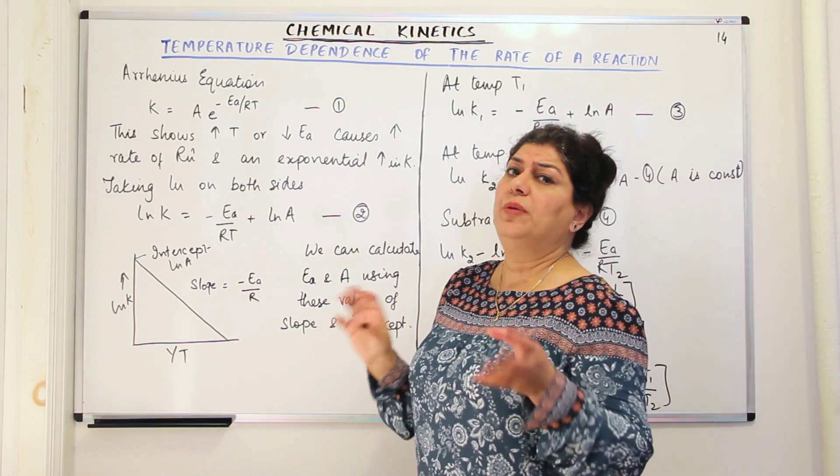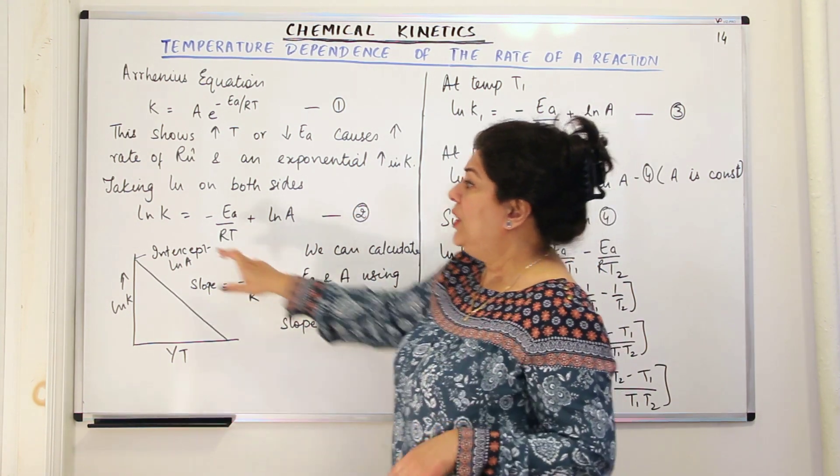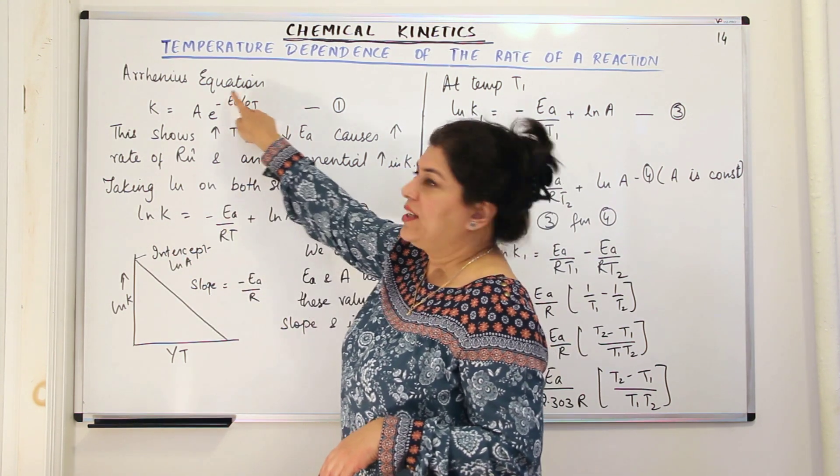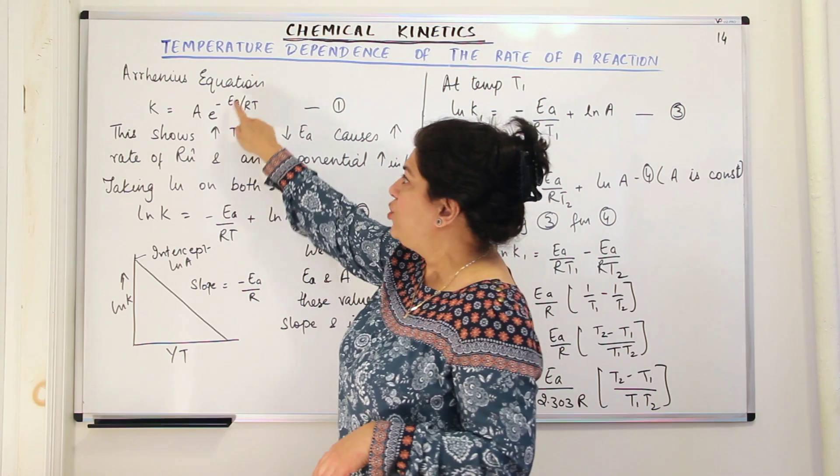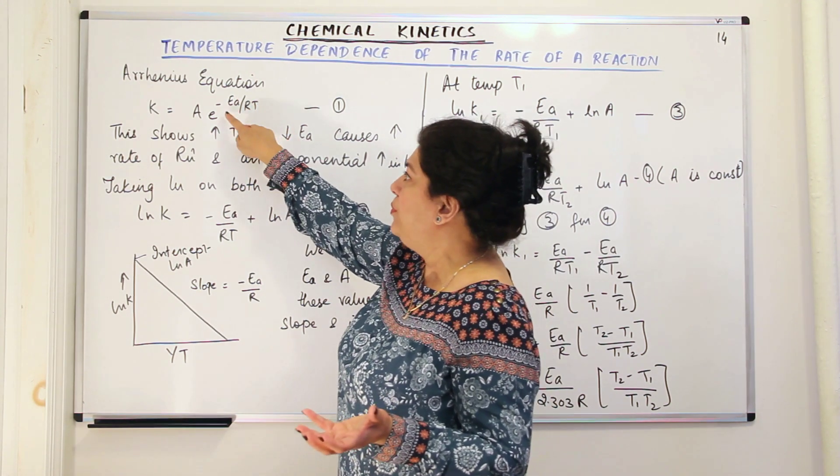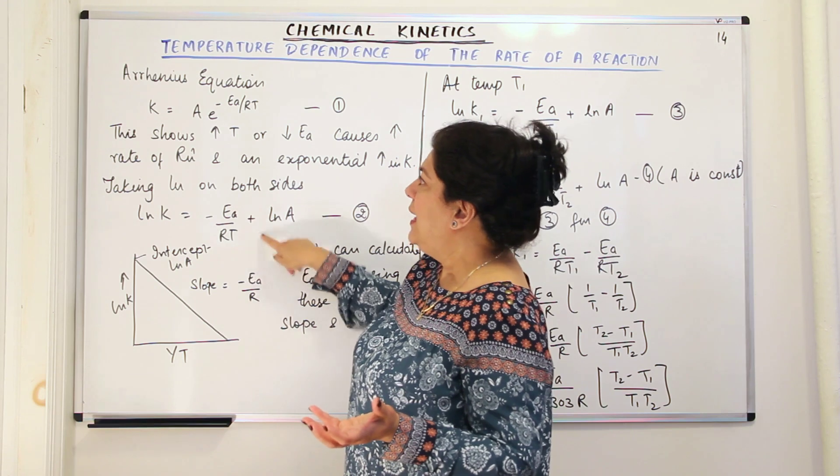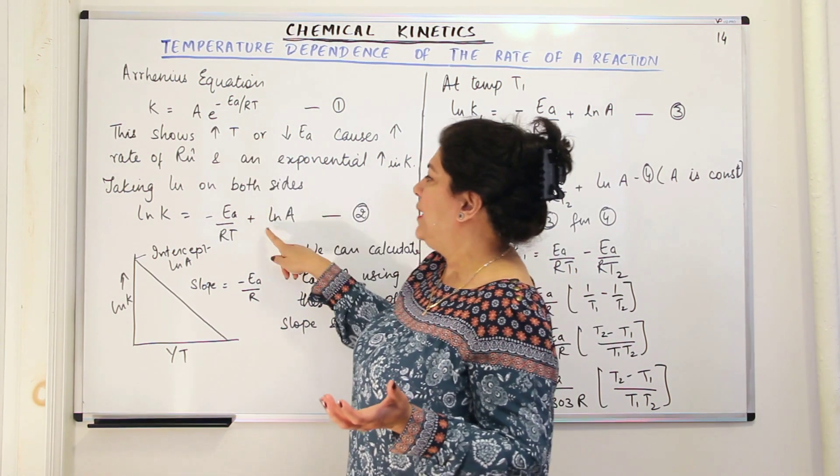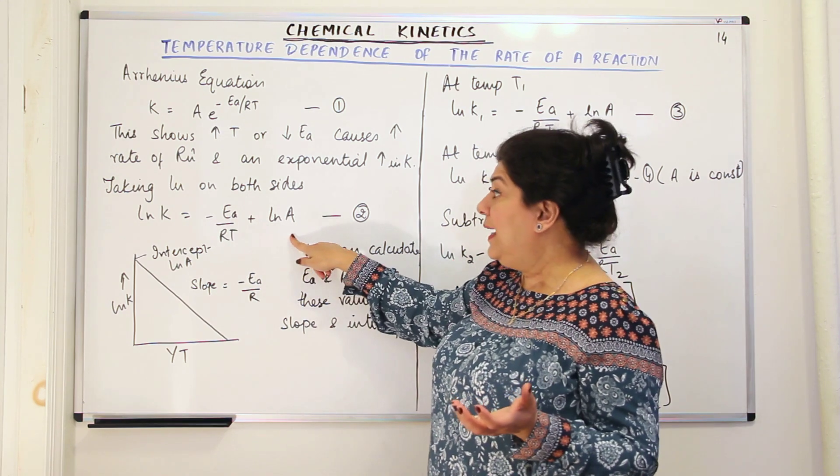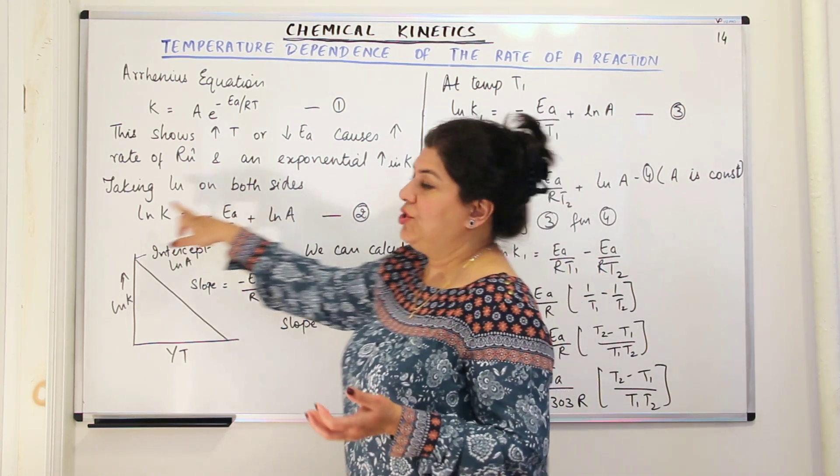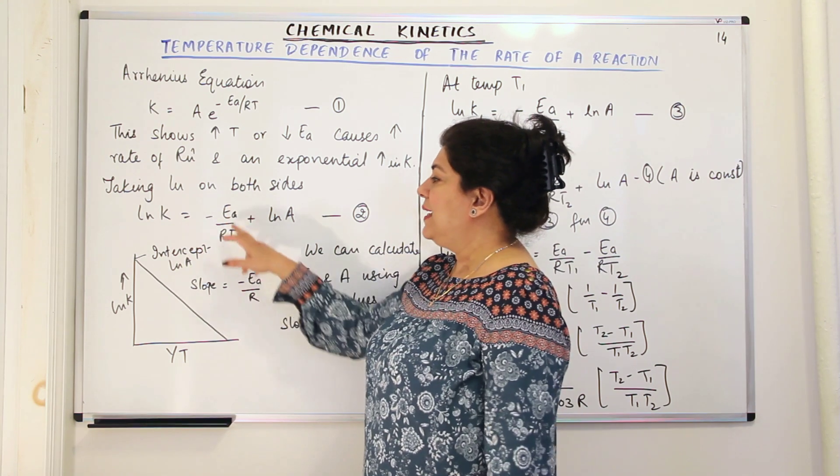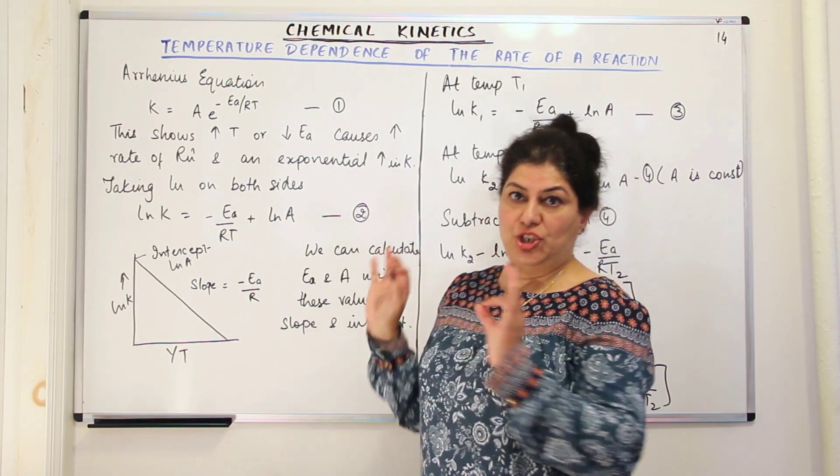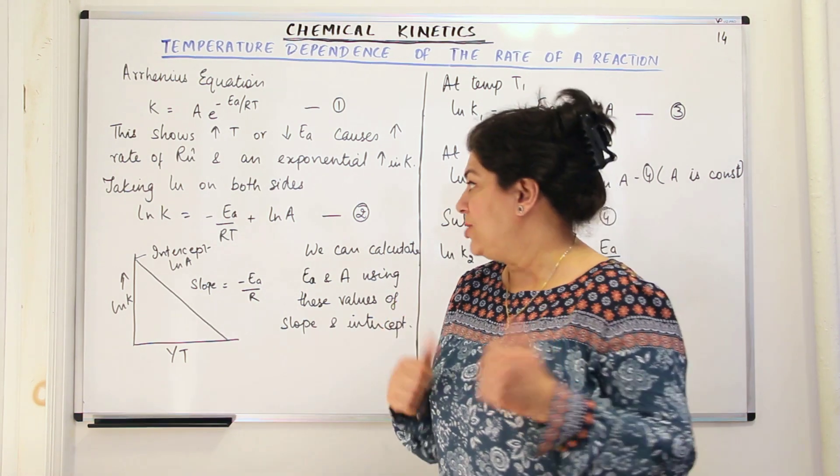If you take log on both sides of this equation, you'll get ln k which is equal to minus Ea upon RT plus ln A. This is the equation that you get, that ln k is equal to minus Ea upon RT plus ln A. In order to remove the exponential part, we have turned it into the natural log.